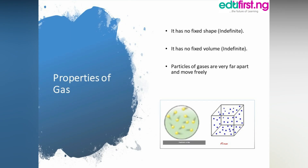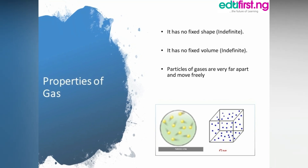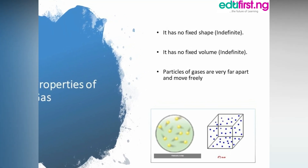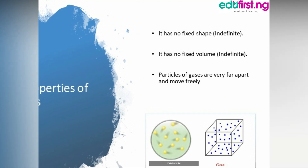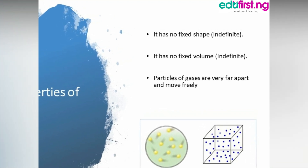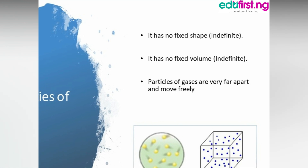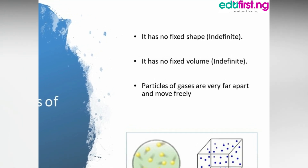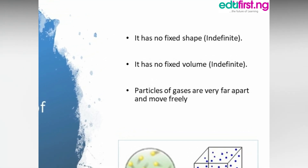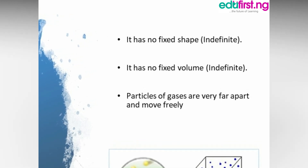The last one: properties of gas. One, it has no fixed shape, meaning that the shape of a gas depends on the container. Two, it has no fixed volume — that also depends on the container. Three, particles of gases are very far apart and move freely.